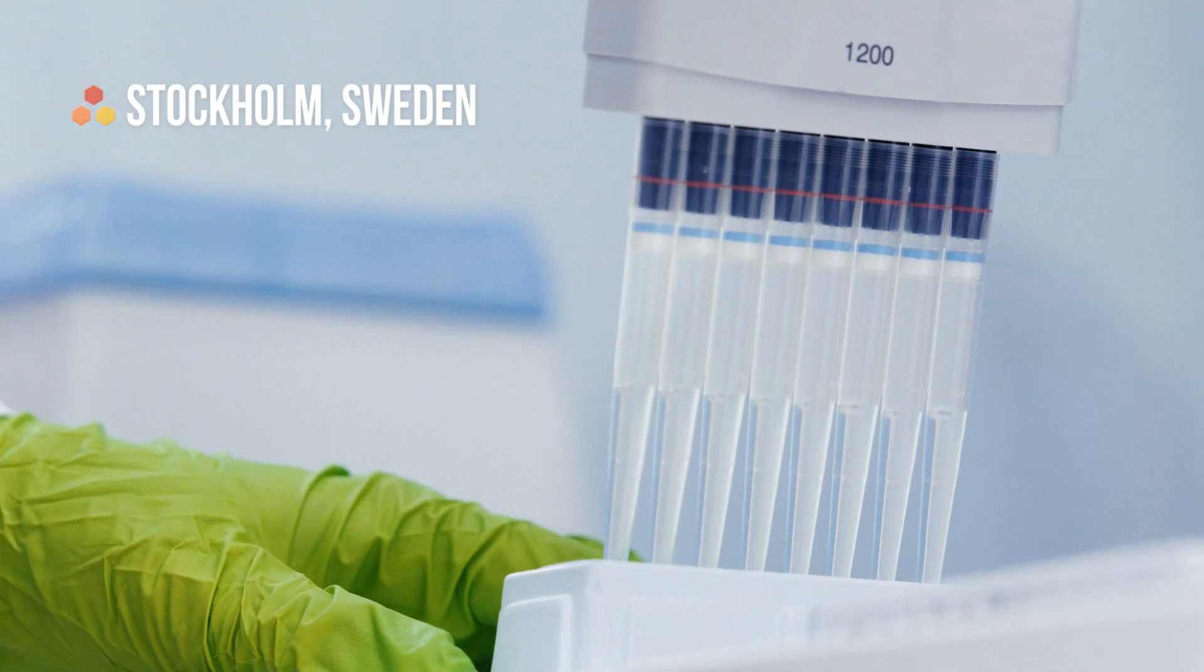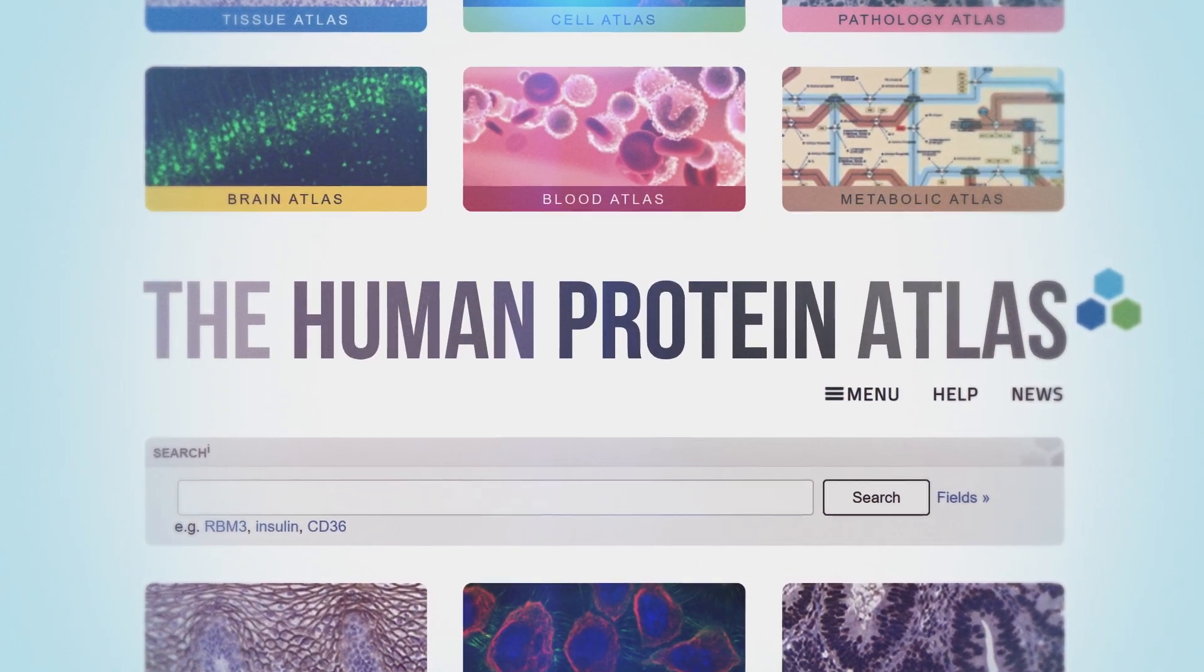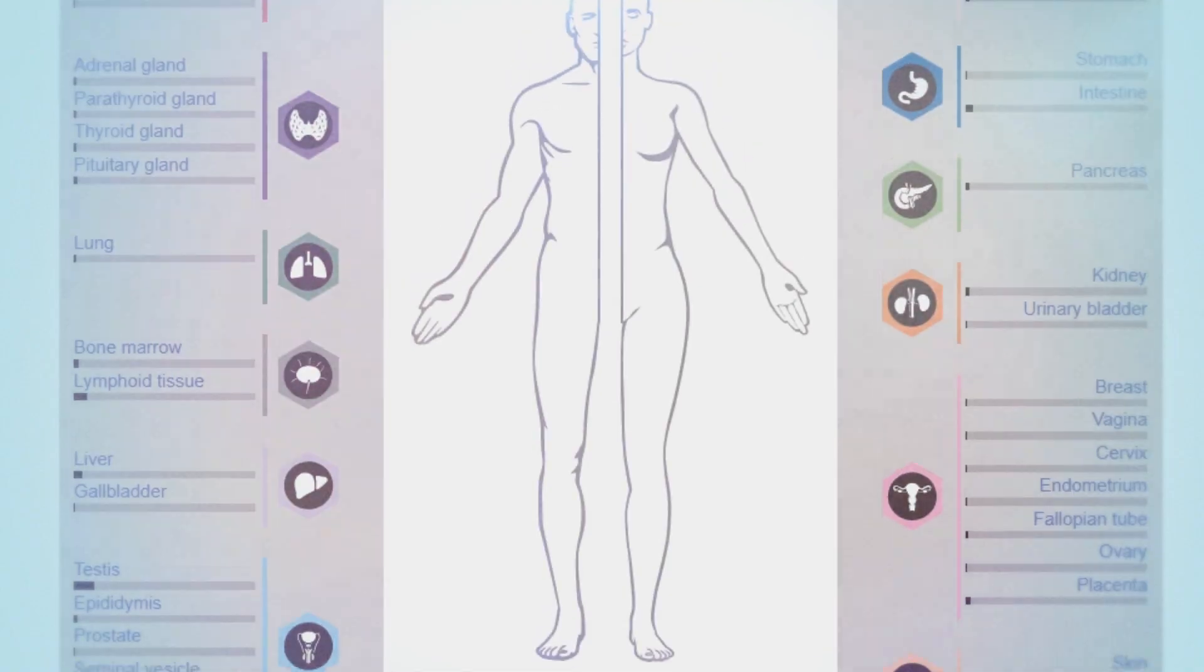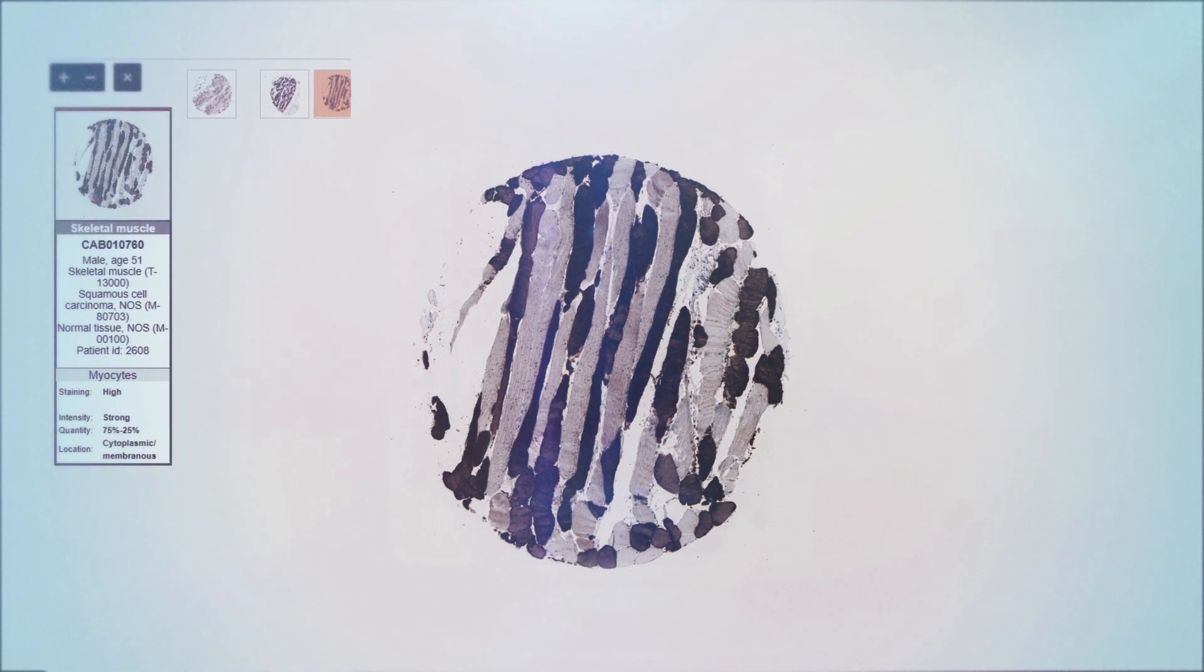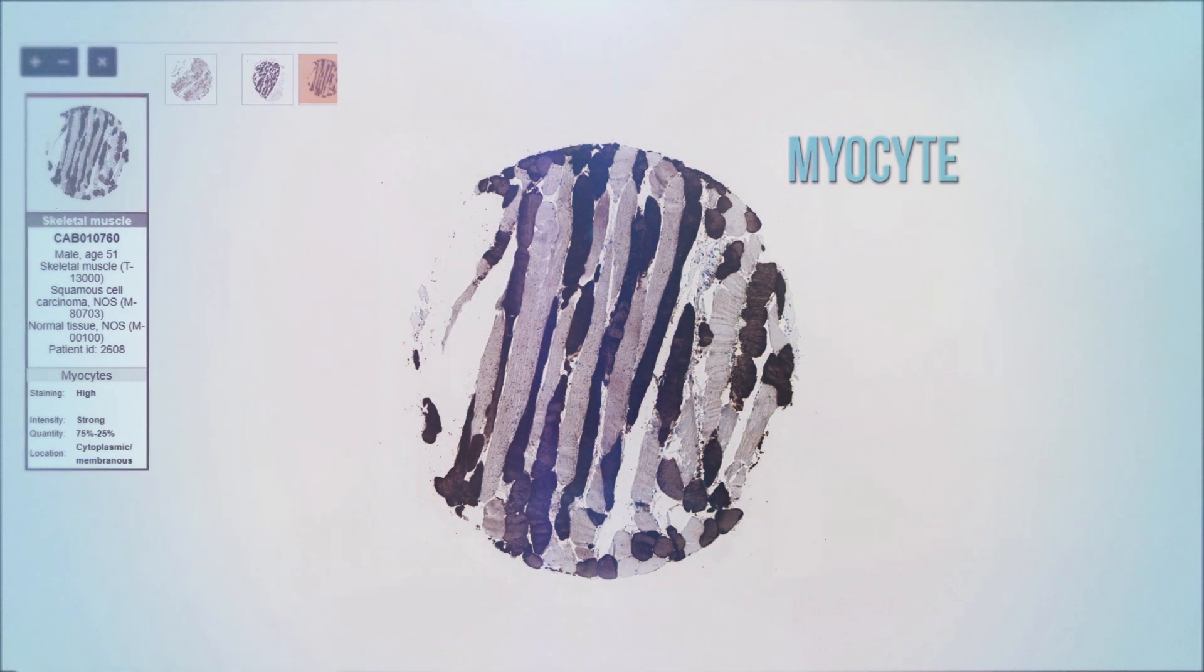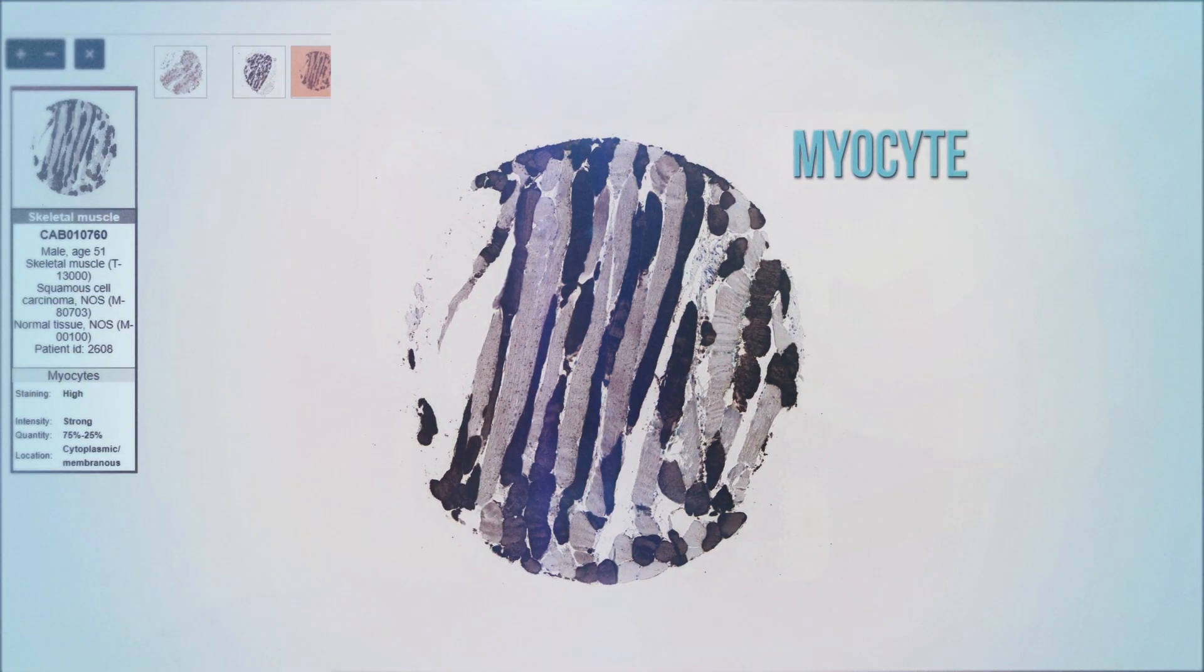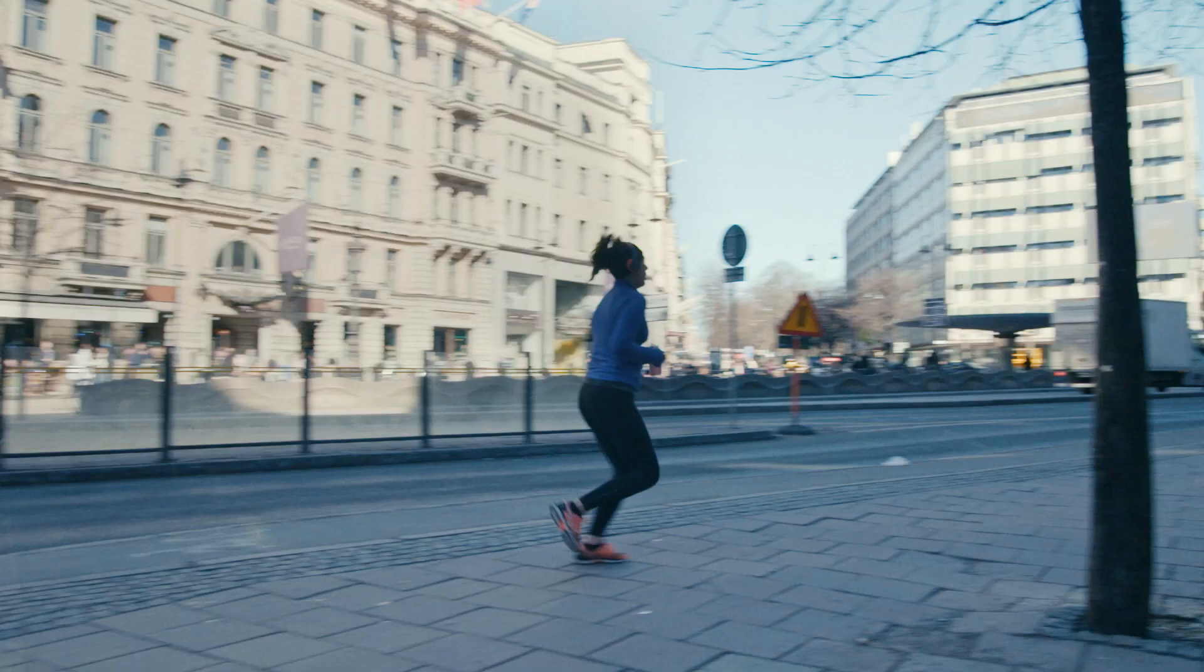The Human Protein Atlas project is mapping out all of the different proteins in the human body. Through the HPA open access website, researchers can study these proteins and see exactly where they are located. For example, the predominant cell type in skeletal muscle is the myocyte, which contains the proteins actin and myosin.